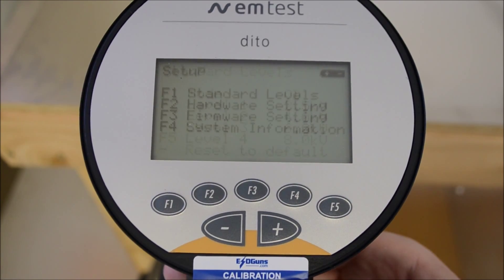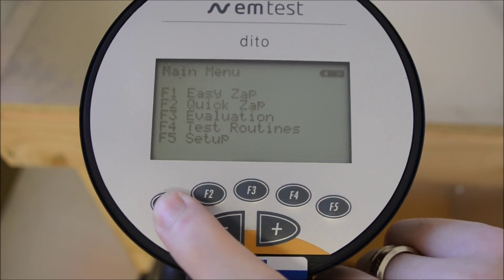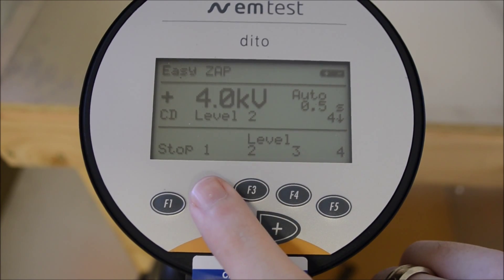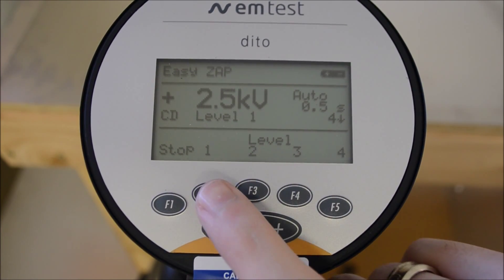Pressing the trigger to initiate the change and backing out to the main menu we revisit easy zap mode and recall level 1, which now arms itself at 2.5 kb.